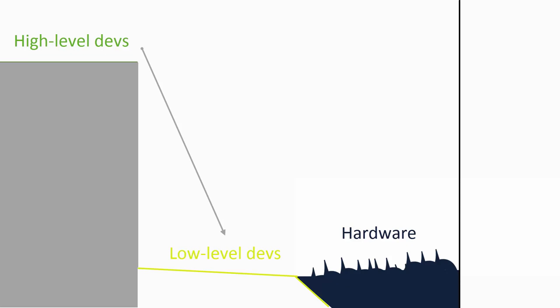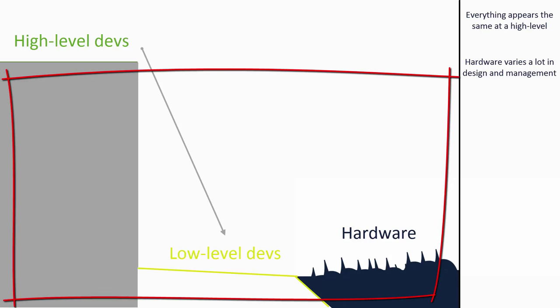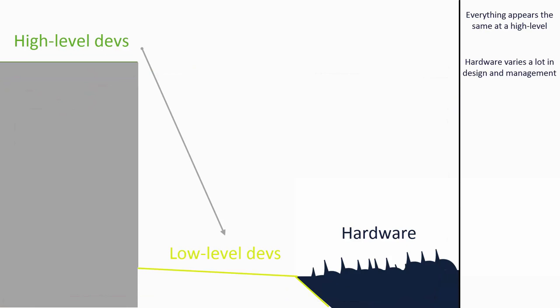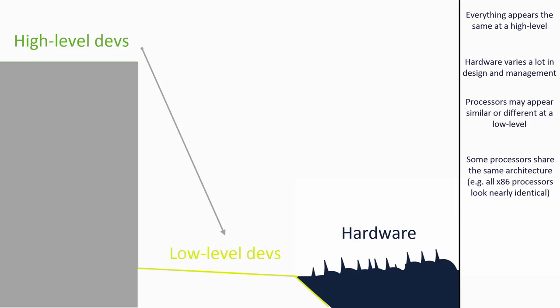The low-level developers manage the hardware so that the high-level developers can just shout down and ask for something and have it given to them. The top of every cliff is pretty much the same — approximately flat — but the views and the sea beneath are all very different and require very different management. Each different cliff is like a different processor architecture. To the high-level developers on top, they all seem pretty much the same, but to the low-level developers at the bottom, everything can be very different. Keep this in mind, as a lot of the time we will be looking at just x86.